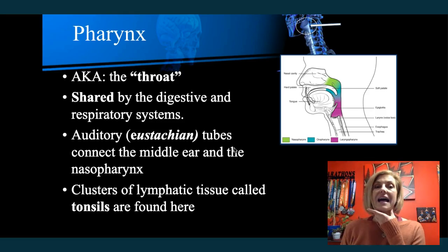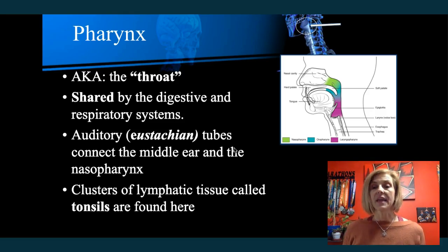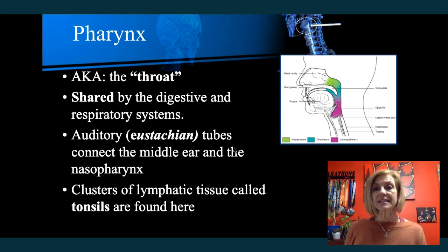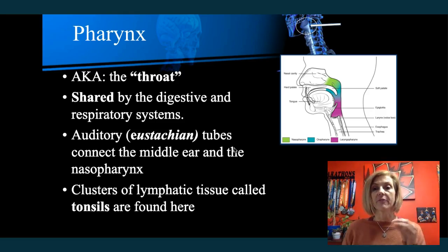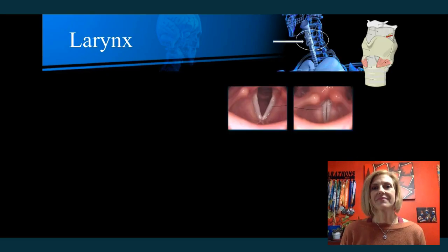You also have tonsils and other lymph nodes in your pharynx area. Tonsils capture bacteria — there are white blood cells there to filter the lymph that's moving through. They can become inflamed when they are infected.